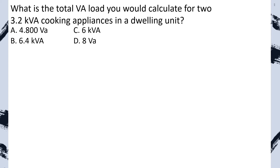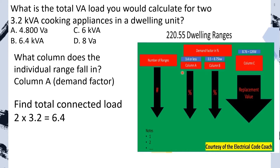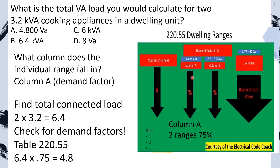What is the total connected load you would calculate for two 3.2 KVA cooking appliances in a dwelling unit? First question: what column does our individual range fall in? Ours falls into column A. Find our total connected load: 2 multiplied by 3.2 KVA gives us 6.4 KVA. Now check for demand factors. We start on the left-hand side of our table, find our number of ranges, cross over and find that for column A, two ranges is 75%. We take our 6.4 multiplied by our demand factor to get our new reduced load, and we select A.